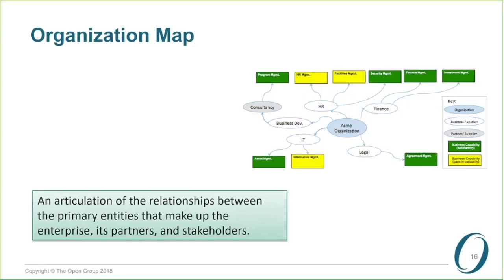We have the idea of an organization map. This is, I guess, confusingly similar to an org chart — but it isn't an org chart. The key thing here is to represent the depth of the relationships between the primary entities that make up the enterprise, together with its partners, its stakeholders, and its business partners. So we're not concerned so much with the people as with the relationships that we need.